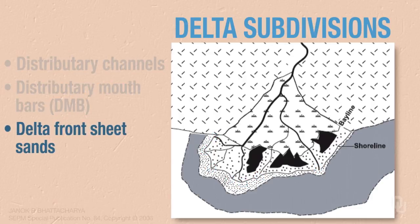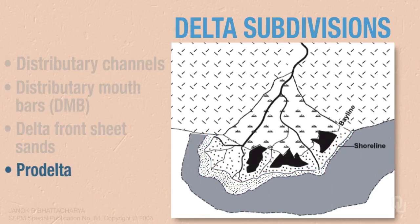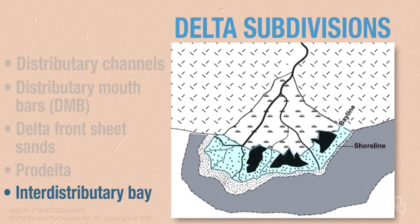There are delta front sheet sands, which are spread out in front of the delta. There's the pro-delta, which is out in front of the delta. In between the distributary channels, you find interdistributary bays.